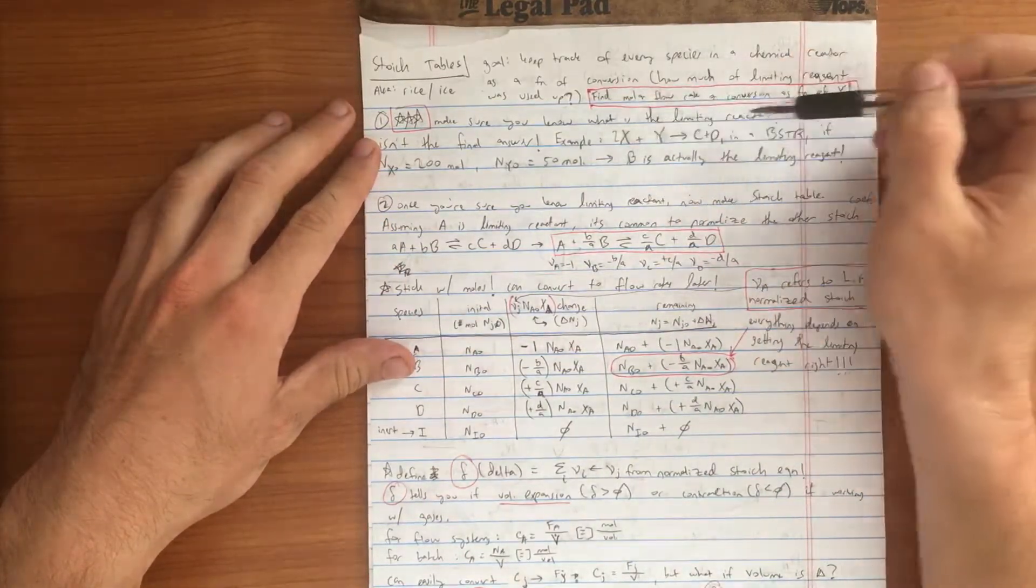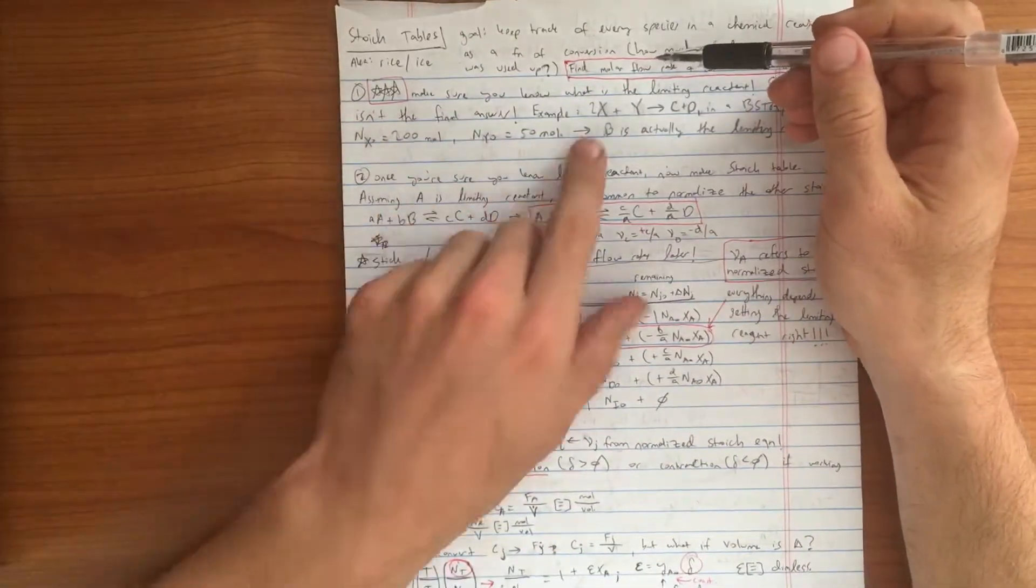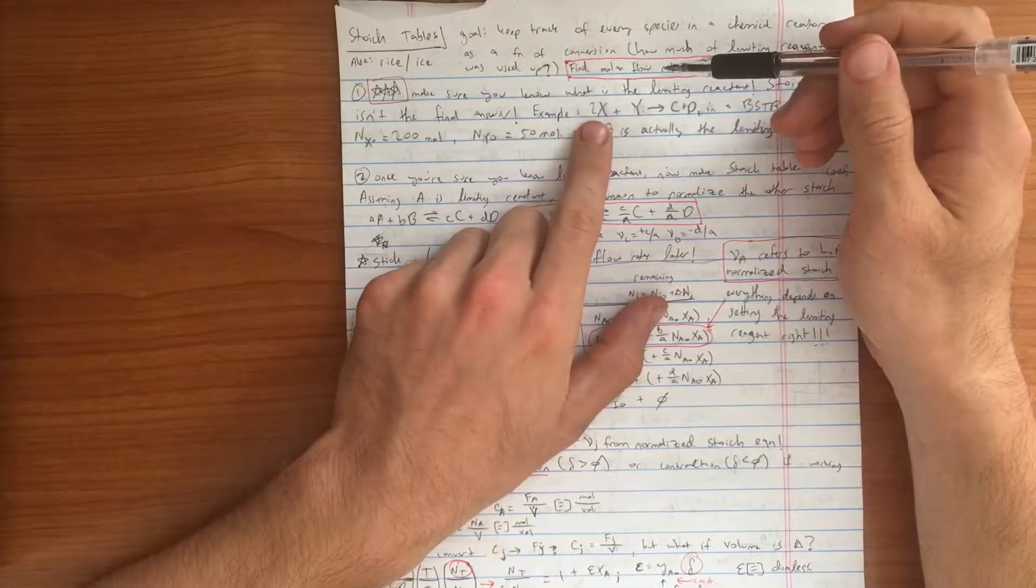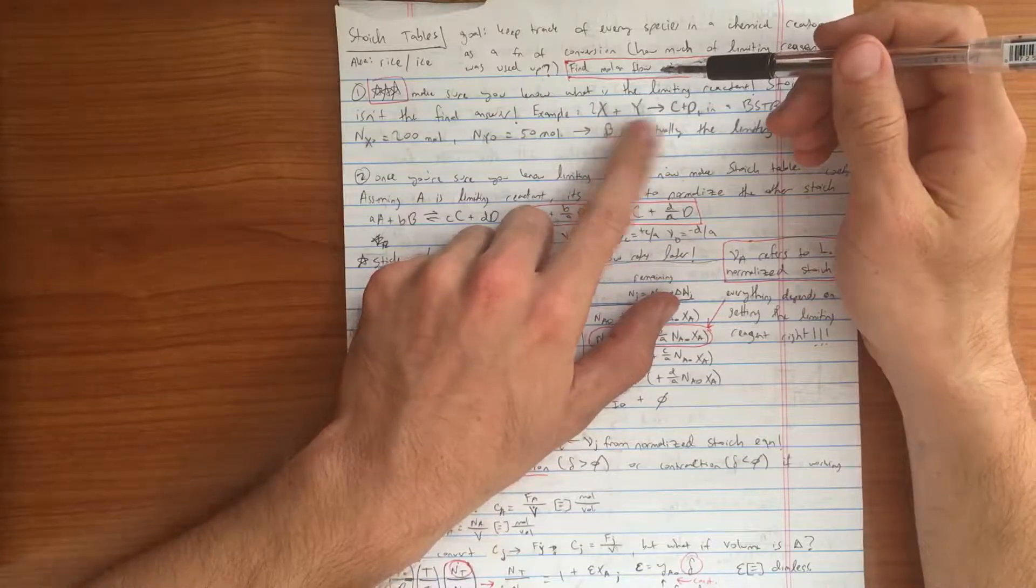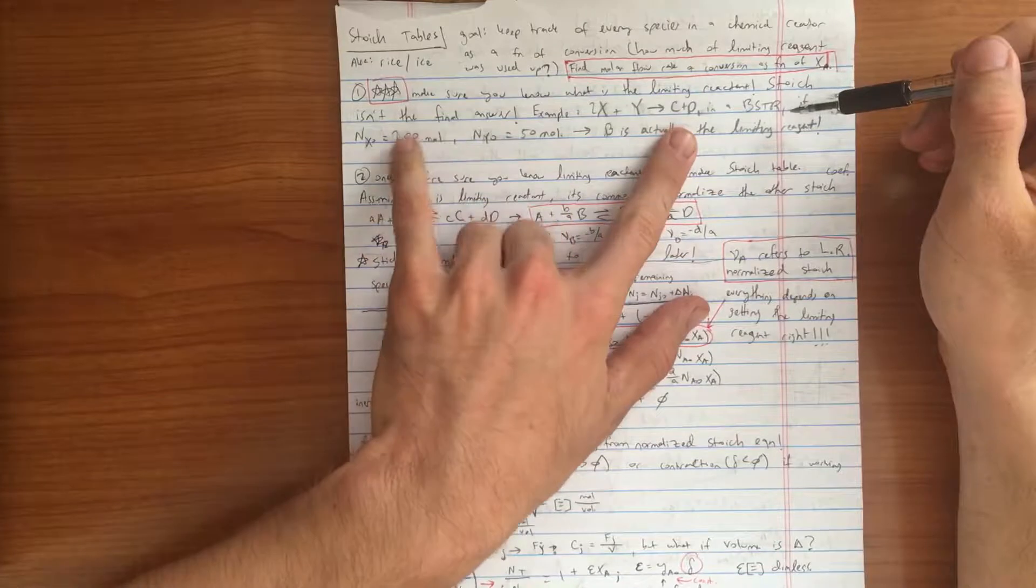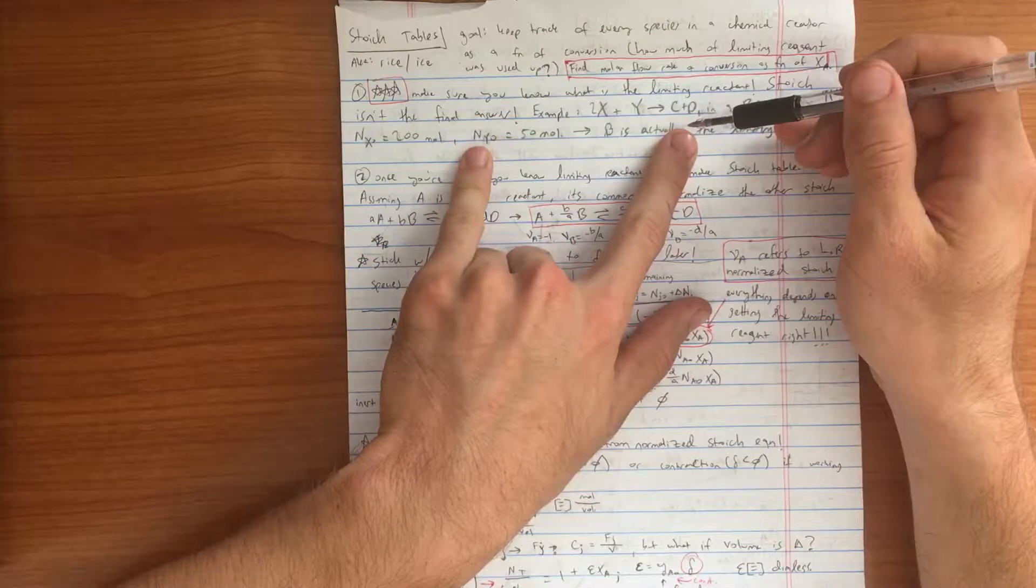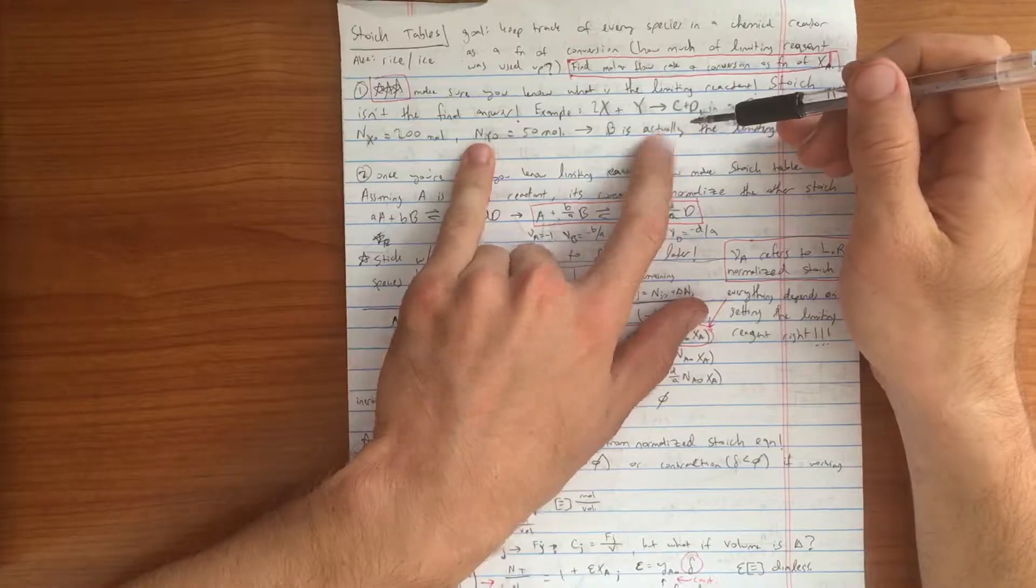For an example, pretend we have 2 moles of X reacting with 1 mole of Y to form 1 mole of C and 1 mole of D in a BSTR with N sub X equals 200 moles and N sub Y equal to 50 moles initially.